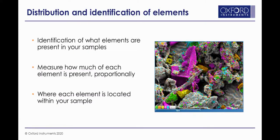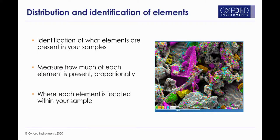EDS can thus provide a range of information about your specimen. It can identify what elements are present, measure how much of each element is present and display them on a proportional basis, and indicate where each element is located by producing EDS maps. What does this mean for biological research? I'm going to spend the next few minutes giving you different examples of how EDS can contribute to our understanding of biological specimens.